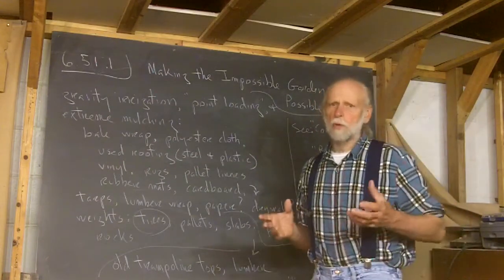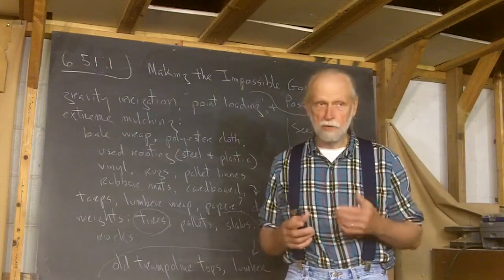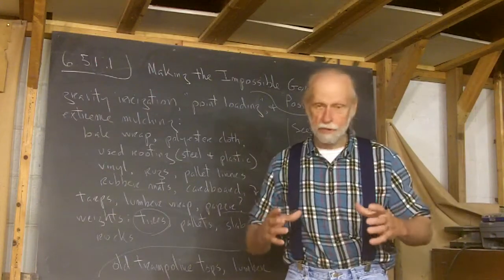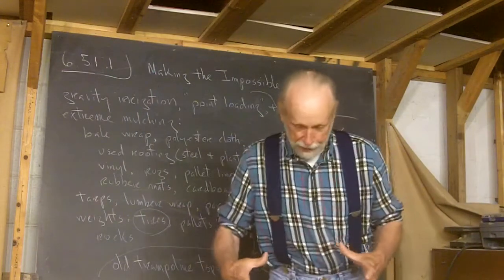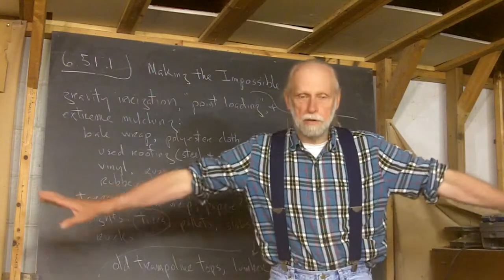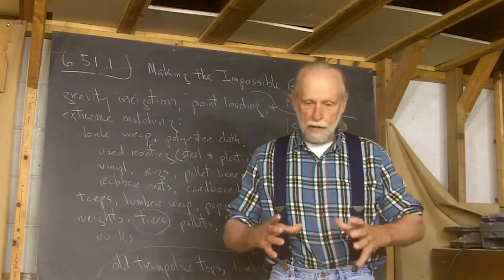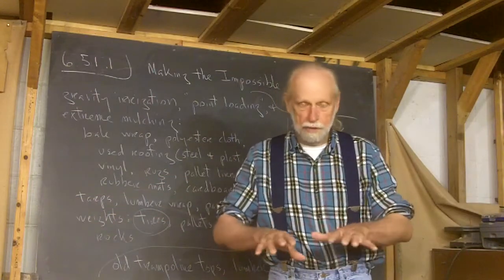Another thing is what I call point loading. By using, at least this first year, mostly or starting with plants that really only need an area about that big of fertility. That's where the roots go, and then they spread out across the ground. I can be covering 100 square feet, say 10 by 10, or maybe not that much, 8 by 8 maybe.